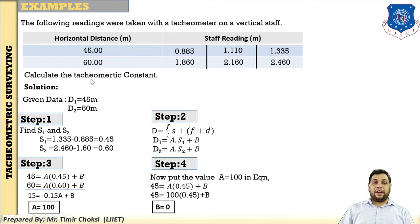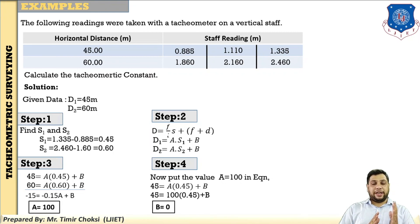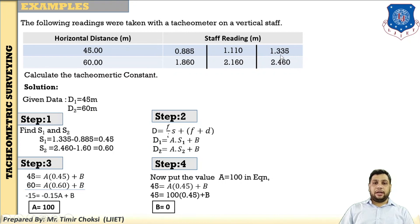In this example, calculate the tachymetry constants. When you purchase the tachymeter from the manufacturer, the values of A and B are given. This example checks the tachymetry constant A and B — comparing or verifying the value of tachymetry constant from field data. First write the data: D1 equals 45 m, D2 equals 60 m. Step 1: find S1 and S2. S1 equals upper reading minus lower reading, which gives 0.45. The second observation value is 0.60.